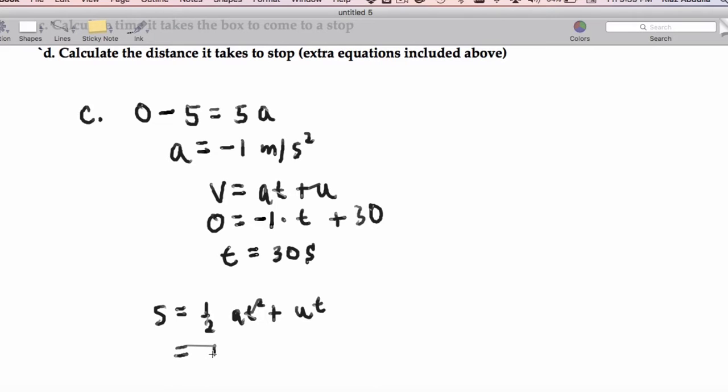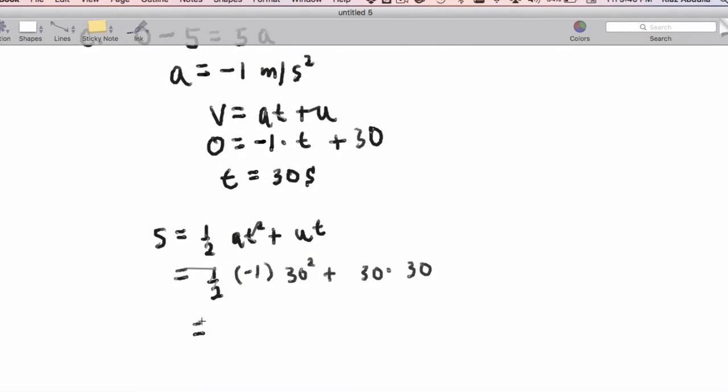That's going to be 1 half times our acceleration, which is negative 1 times 30 squared plus 30 times 30. When I actually work all this out, it's going to end up giving me 450 meters of distance.